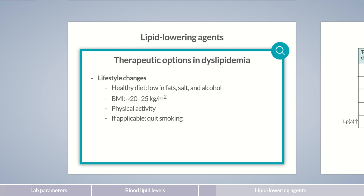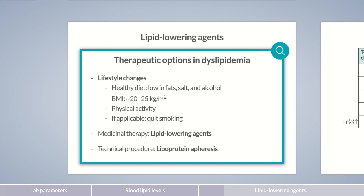If these measures don't result in the desired blood lipid levels, or if there's an overall high risk, lipid-lowering agents are used supplementarily. In genetically elevated lipoprotein levels, or in exceptional cases when drug therapeutics fail, a technical procedure can also be used: lipoprotein apheresis. In this extracorporeal procedure, a machine is used to remove LDL, VLDL, and lipoprotein(a) particles from the blood.